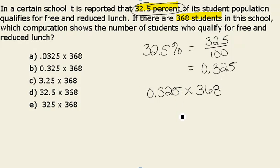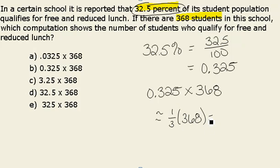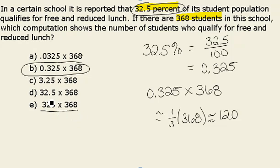We will notice that if we take a whole number and multiply it by a number between 0 and 1, it would result in a product that is less than 368. Roughly a third of our students qualify for free and reduced lunch. Therefore, if we looked at an estimate of roughly a third of 368, we would get approximately 120 students. We can see that B is the only answer that would make sense, as other choices would result in numbers bigger than 368.